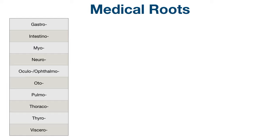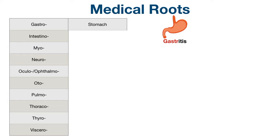Let's continue with more common roots. Again, hit pause in the video and see how many you can name. Starting with gastro, this refers to the stomach. You can think of gastritis — we mentioned earlier that -itis means inflammation, so gastritis is inflammation of the lining of the stomach.